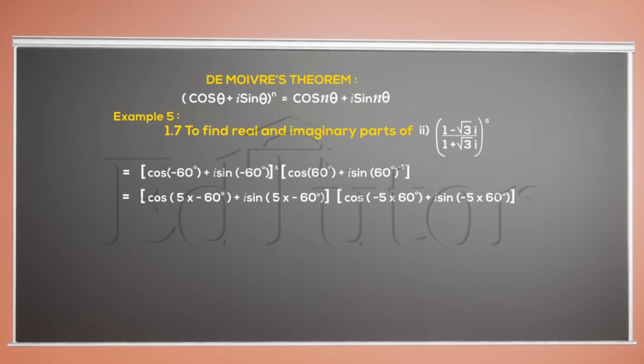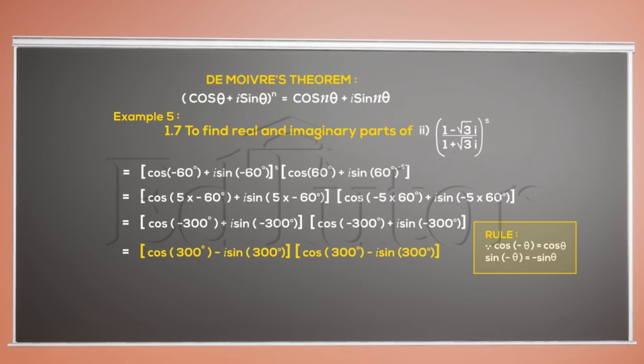Time to apply the de Moivre's theorem. It says to multiply the power with theta. Also, multiply the numbers in argument to get this simplified form. Now, we learned in the same lesson that cos of minus theta is cos theta and sin minus theta is minus sin theta. Let's apply it here too.